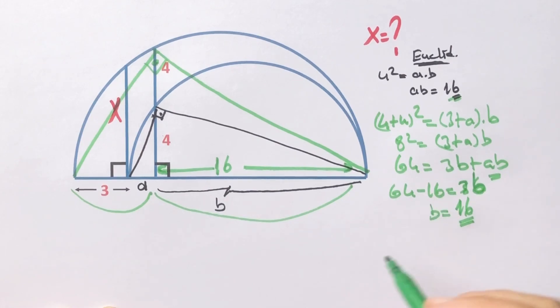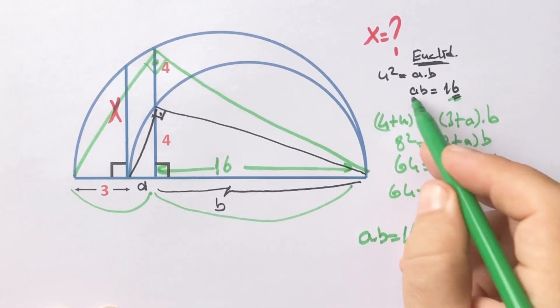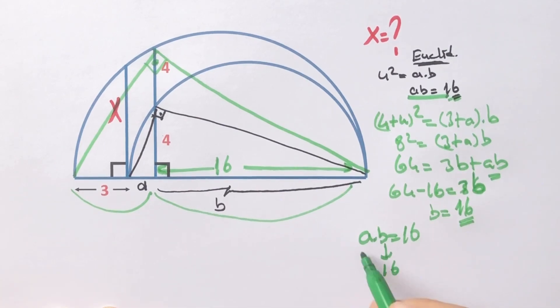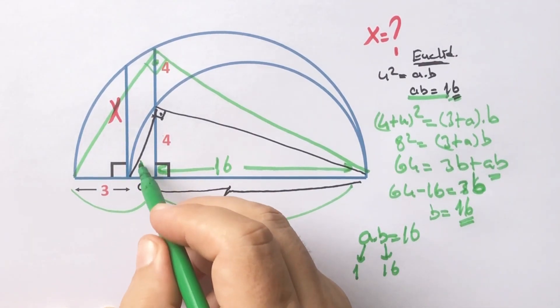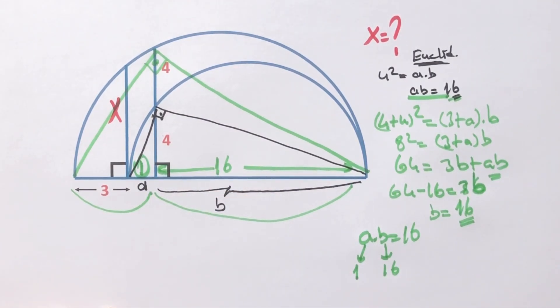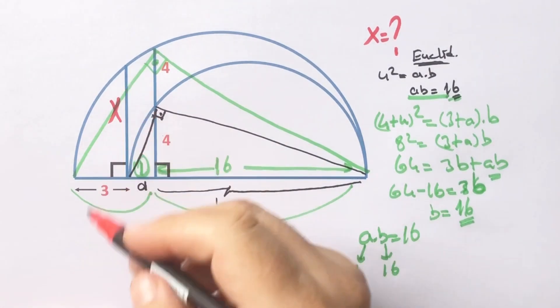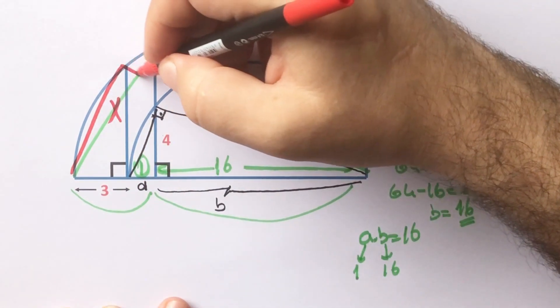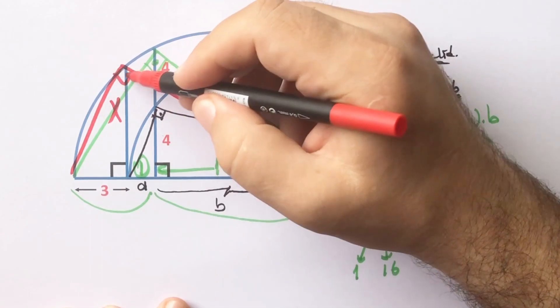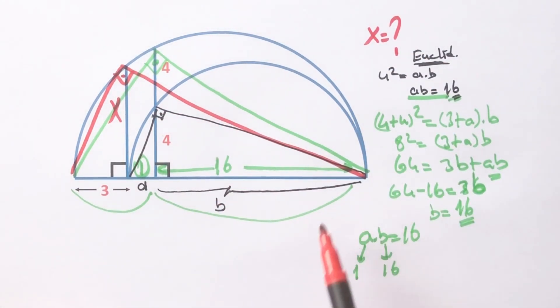You know that a times b equals 16, that means a equals one unit. And then likewise, if we connect here, x squared equals three times this part, this part right, one plus 16.